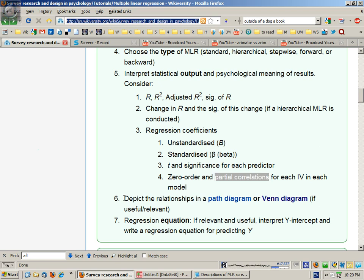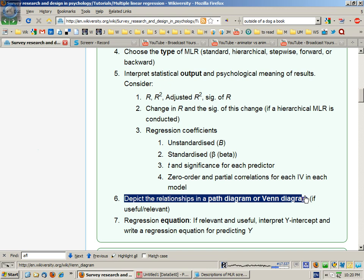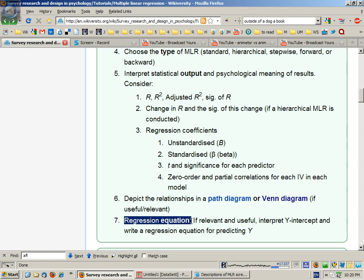It can be helpful then to draw the relationships as a path or Venn diagram to help you understand the results, and finally provide the regression equation if you're trying to use the research for predictive purposes.